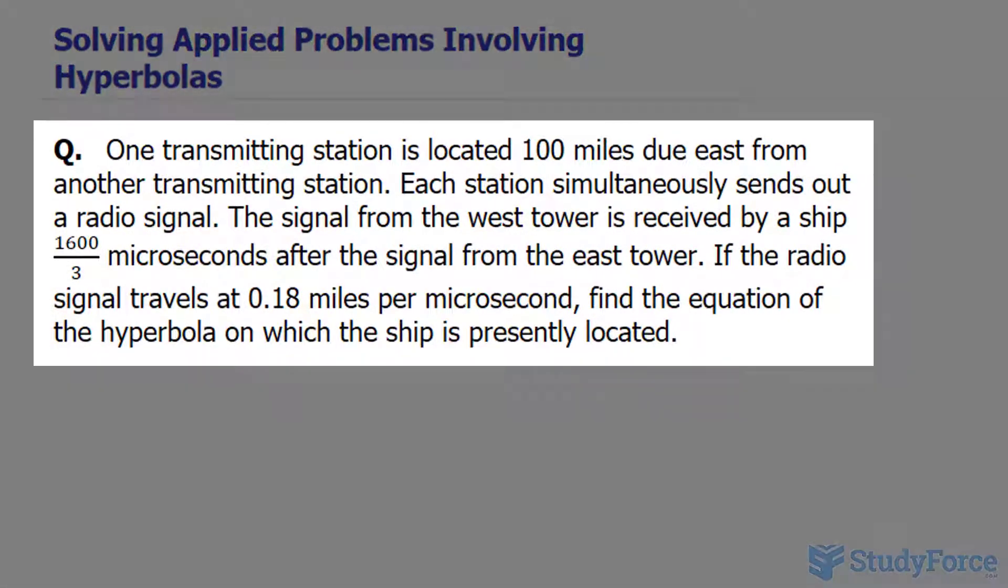The question reads, one transmitting station is located 100 miles due east from another transmitting station. Each station is simultaneously sending out a radio signal.